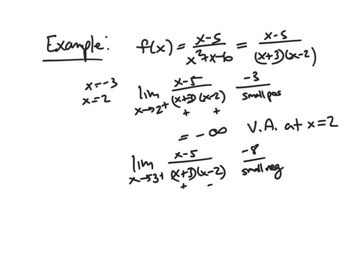Negative over negative, this would actually be positive infinity as our limit. And again, this confirms that we have a vertical asymptote at x equals negative 3.